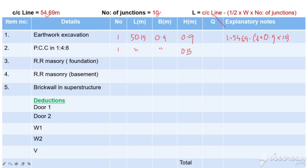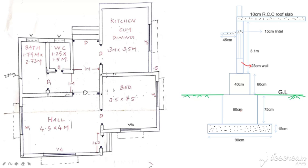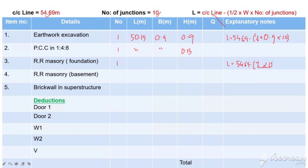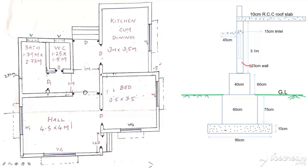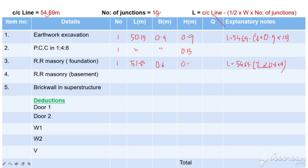For random rubble masonry foundation, which is the basement, the length is equal to 54.69 total centerline length minus half into width — width is 60 cm, so 0.6 — into number of junctions, which is 10. So the length is 51.69, breadth 0.6, and height 0.75.